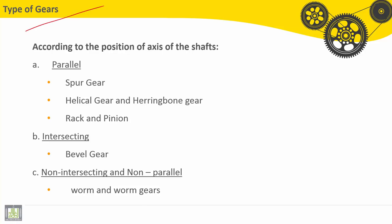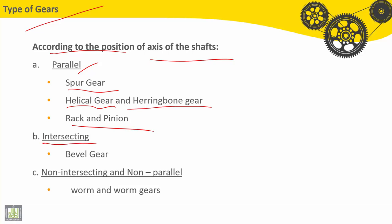Let's see here some types of gears. Gears are classified according to the position of the axis of the shafts. The first group is about parallel axis of the shafts — we can find spur gear, helical gear, herringbone gear, and rack and pinion. The next group is about intersecting axis of the shafts — we find bevel gears. Finally, non-intersecting and non-parallel axis of the shafts — we can find worm and worm gears.